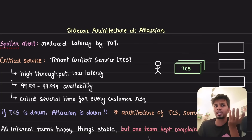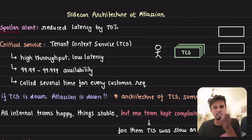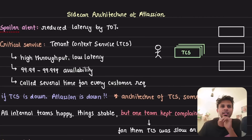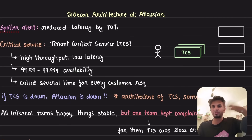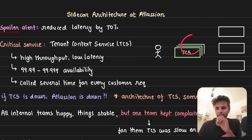Atlassian has one of its most critical services called TCS — the Tenant Contact Service. This is a high-throughput, low-latency service, typically in the five to six millisecond range or even less. It's highly available with four to five nines of availability, and it gets called several times in every request fired on any Atlassian product — Confluence, Jira, Bitbucket — whatever. It's a super critical service.